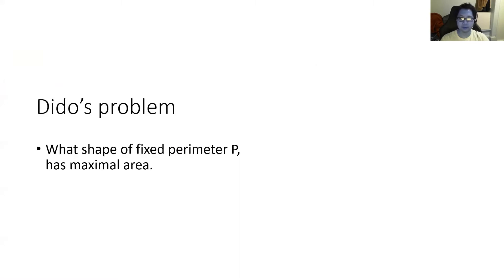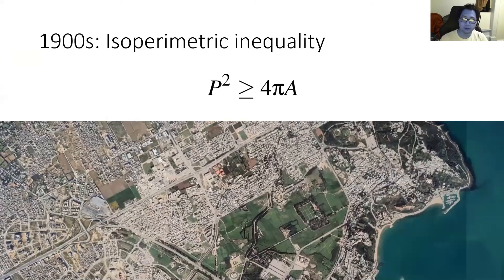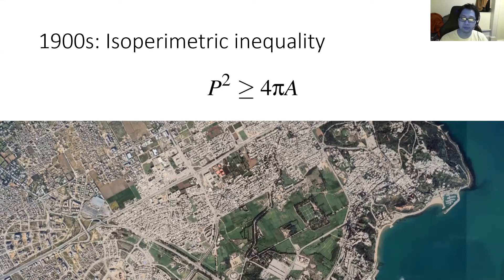And now she has the following puzzle to solve. Given p meters of bull hide, how do you bind the biggest country? This is now known as Dido's problem. What shape of fixed perimeter p has maximal area? Back in 800 BC, this was an open problem, perhaps explaining Dido's puzzled expression. Fast forward to the 1900s, various proofs of the isoperimetric inequality came out, definitively solving Dido's problem with a perfect circle.